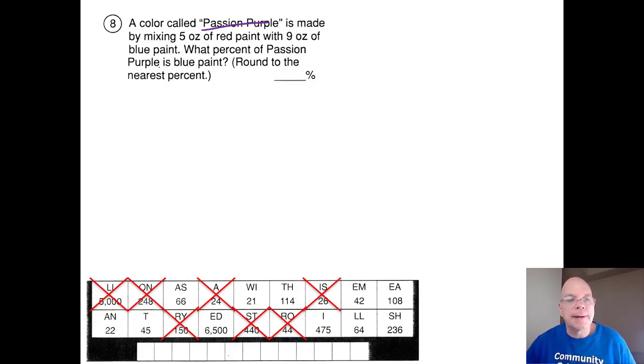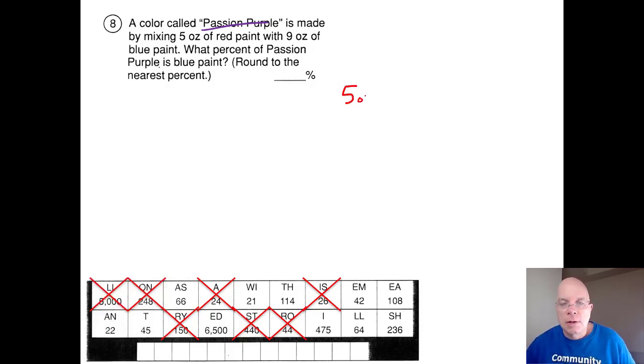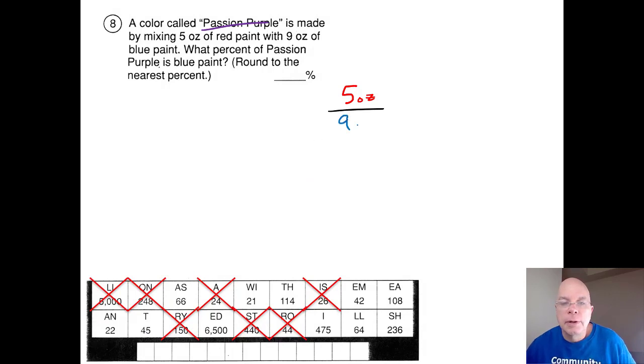What percent of passion purple is blue paint? So I have five ounces of red per nine ounces of blue. This is tricky. This is an interesting problem because it's saying what percent of passion purple is blue paint. If I'm mixing five ounces of red and nine ounces of blue, how many ounces of passion purple does that make? That makes 14 ounces of passion purple.